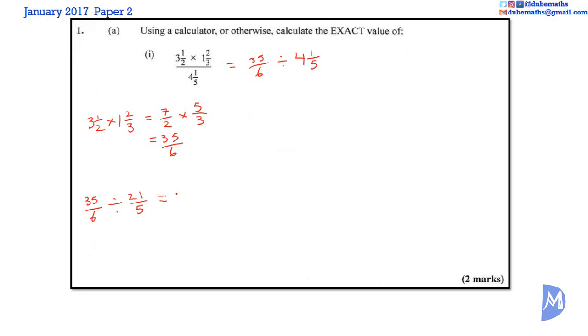It's equal to 35 over 6 multiplied by 5 over 21. We see that 7 could go into both 21 and 35. 7 into 21 is 3. 7 into 35 is 5. We multiply out. 5 multiplied by 5 is 25, 6 multiplied by 3 equals 18.